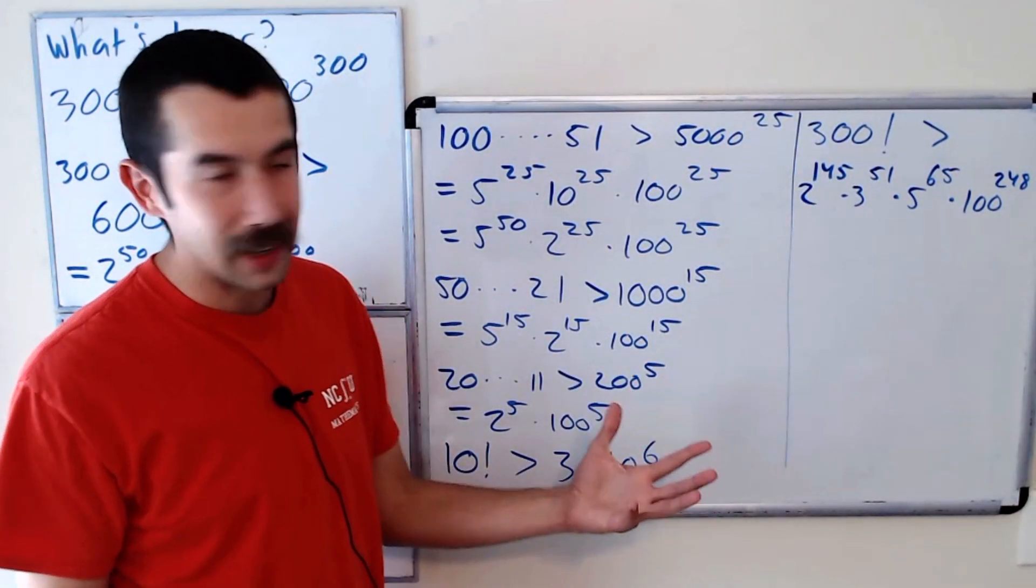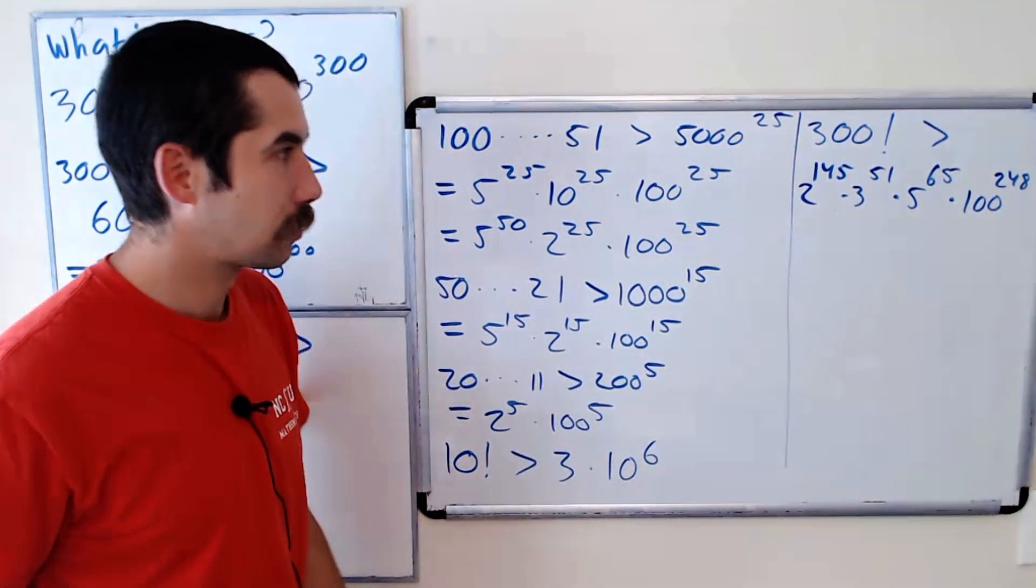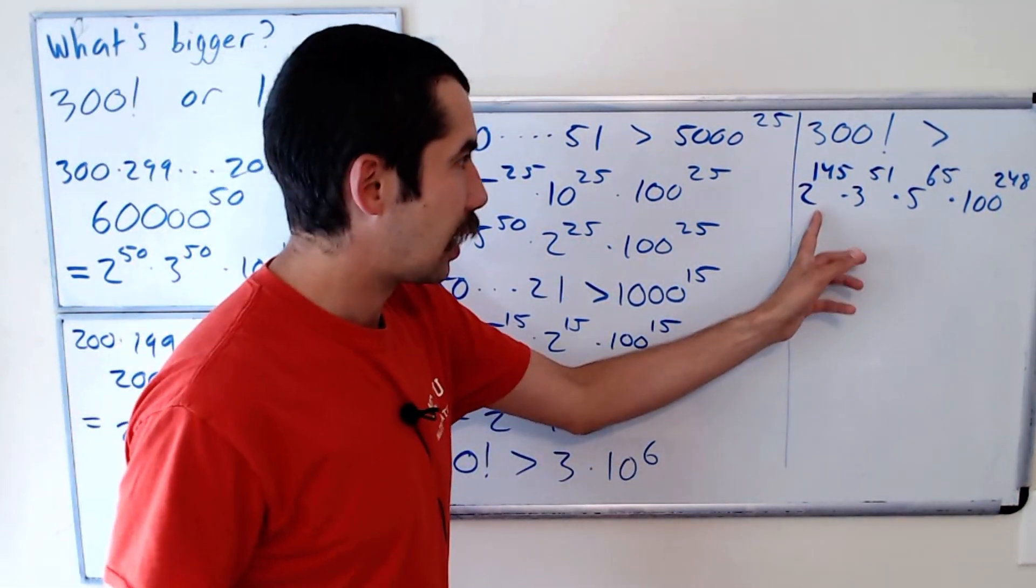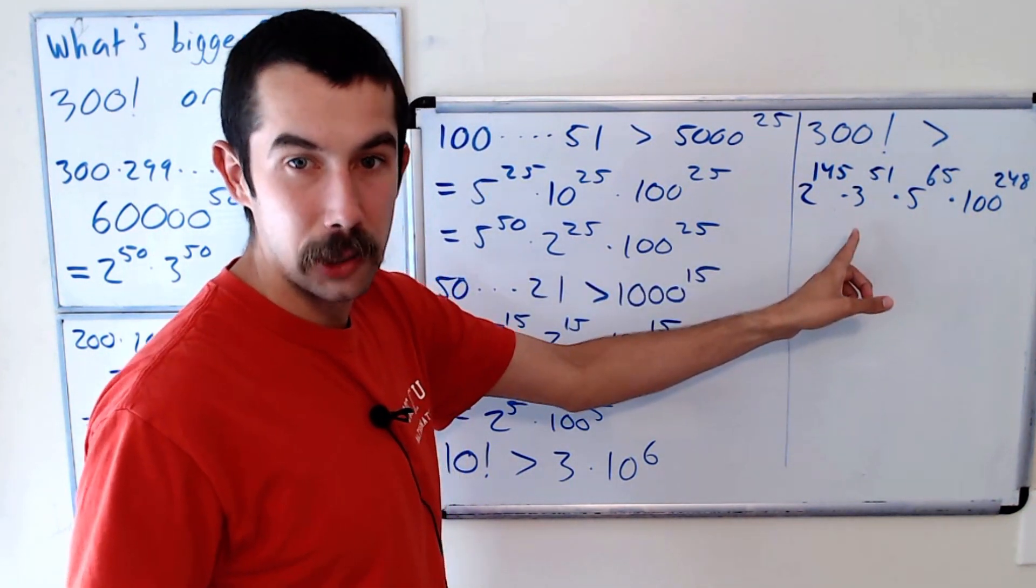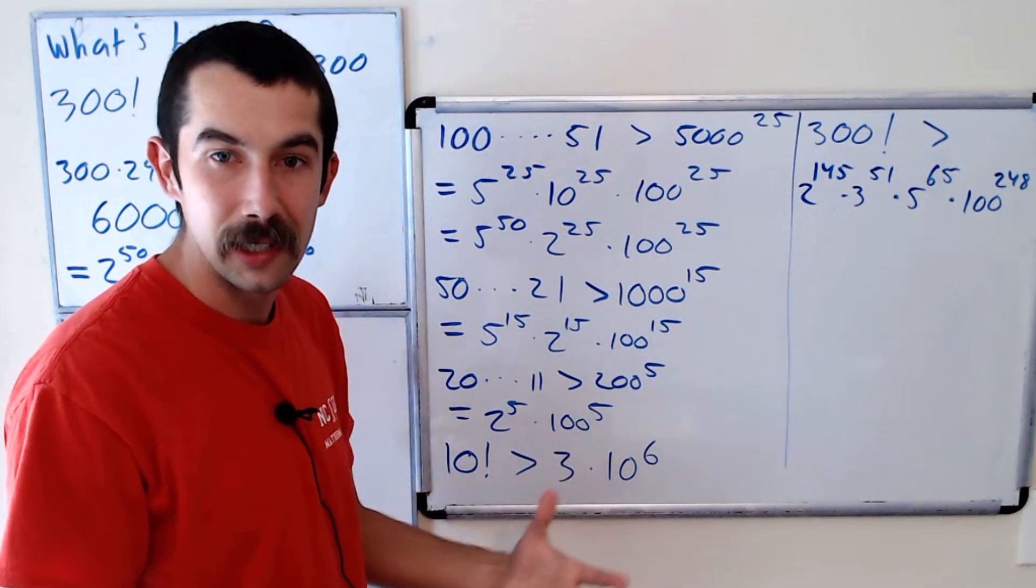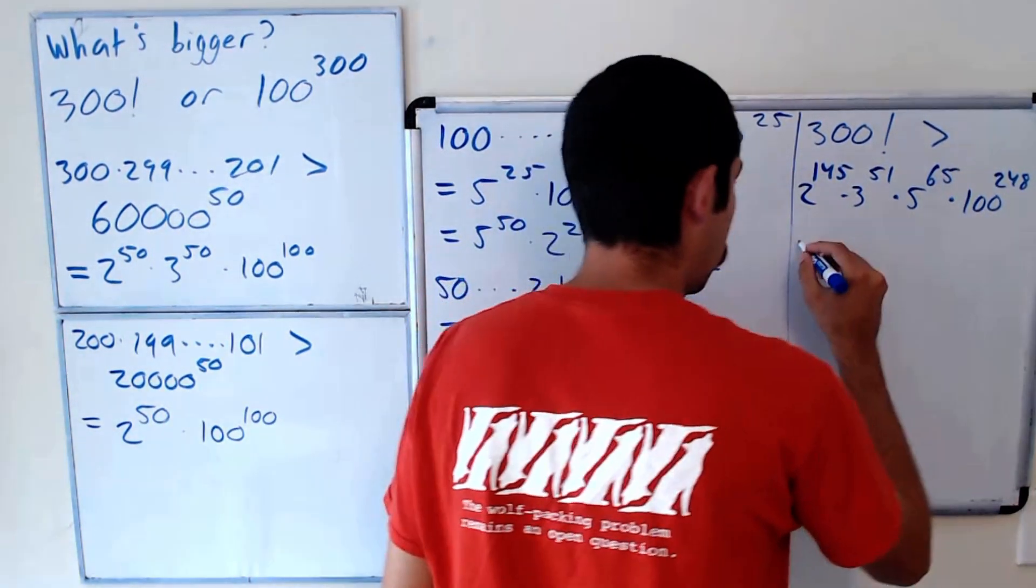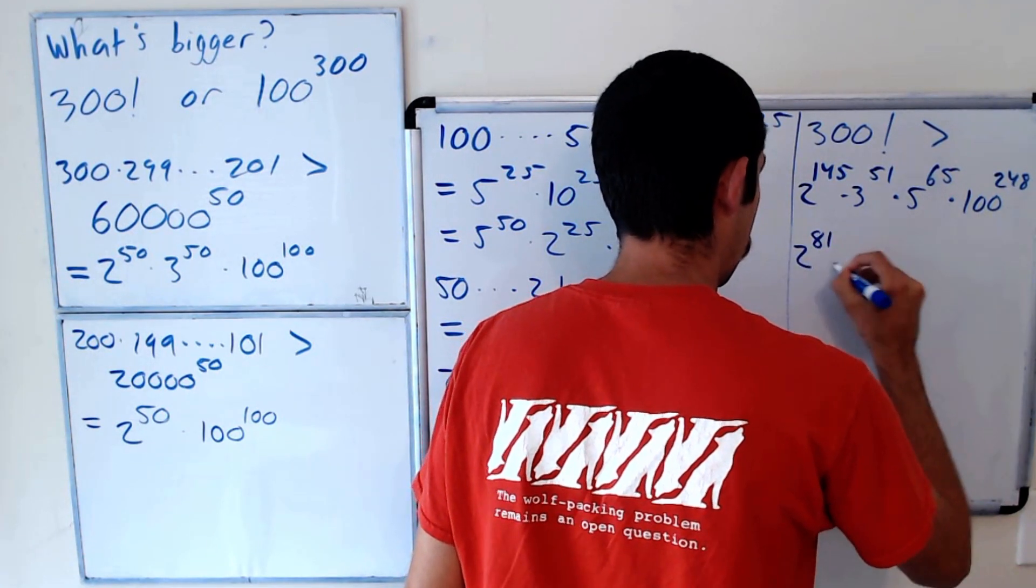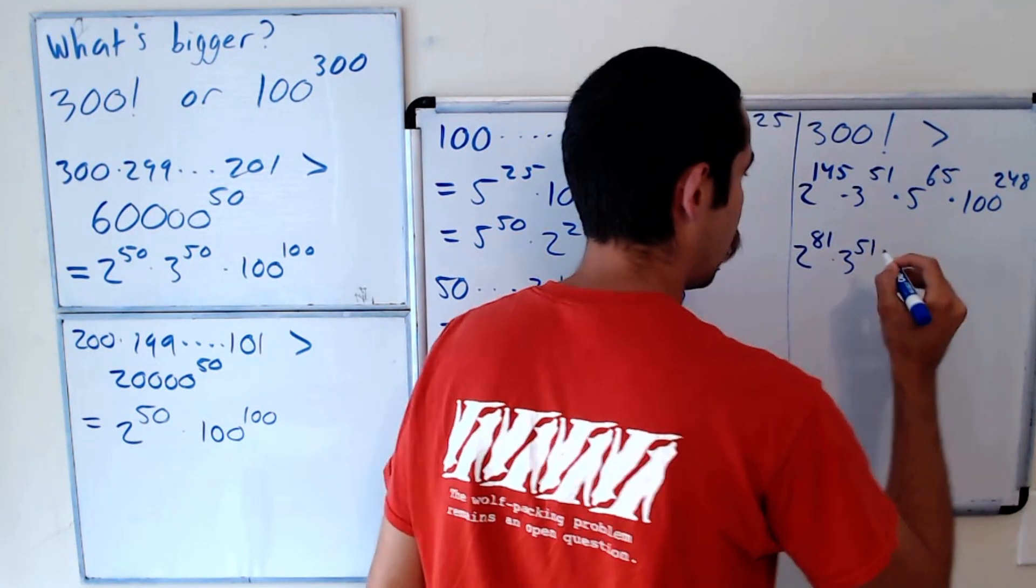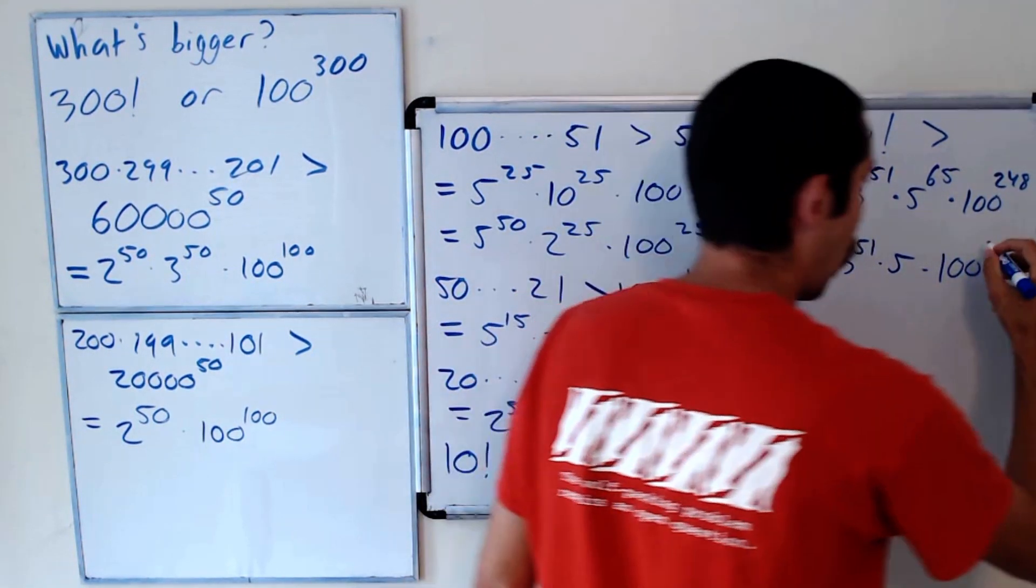Okay, so we're getting there. Let's combine some of these twos and these fives. Let's take 64 fives and 64 twos. That's going to give us another factor of 100 to the 32 power. Okay, so that's going to be 2 to the 81 times 3 to the 51 times 5 times 100 to the 280.